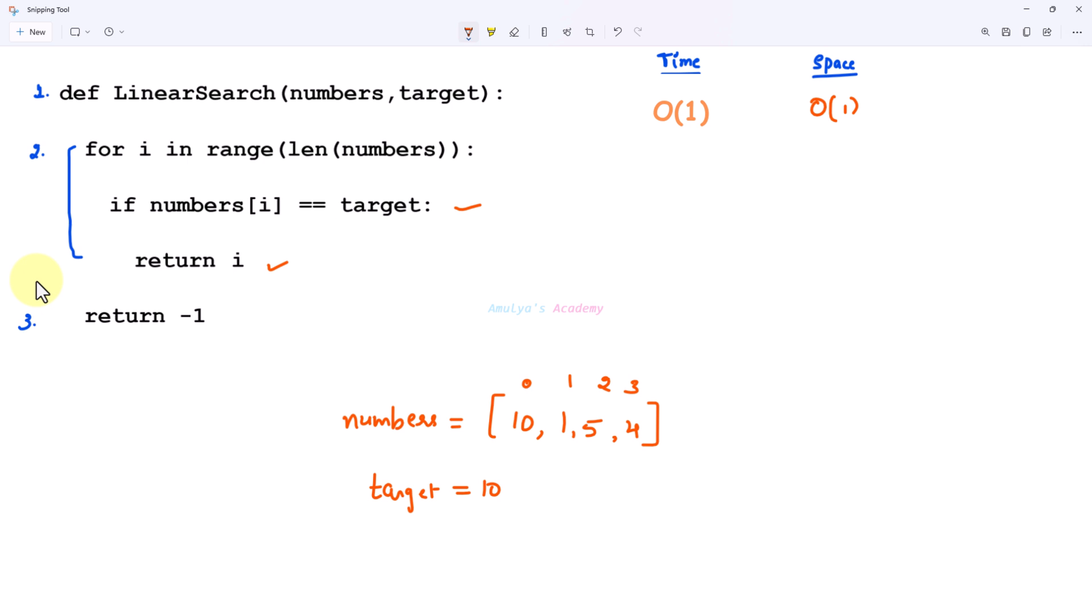It won't execute this for loop again. If our target is present in the 0th index then this loop will execute only once. So I can take time complexity as big O of 1 at that time.